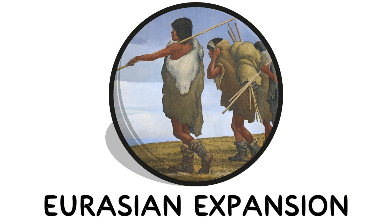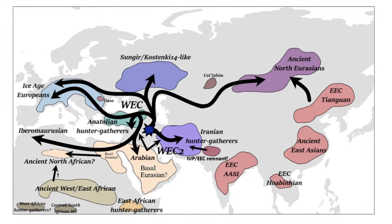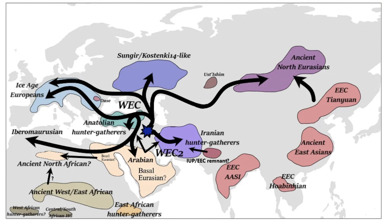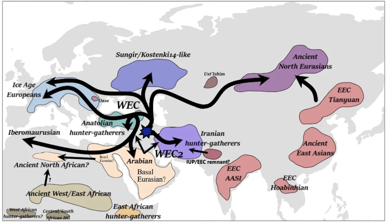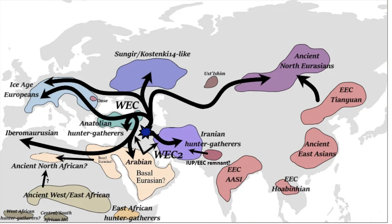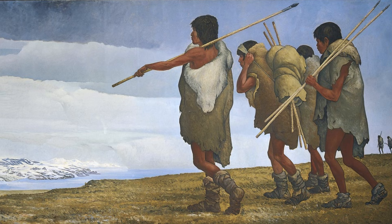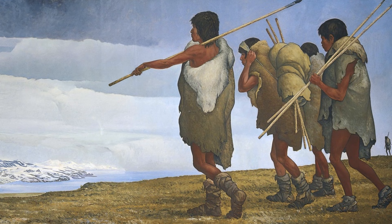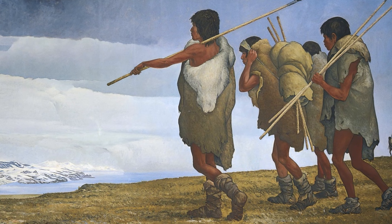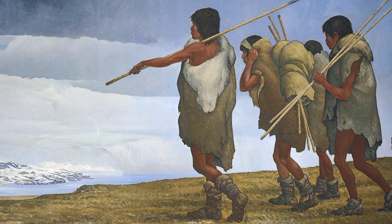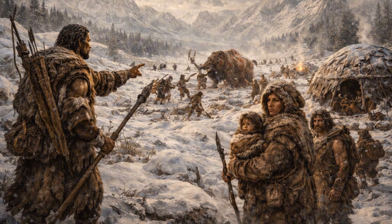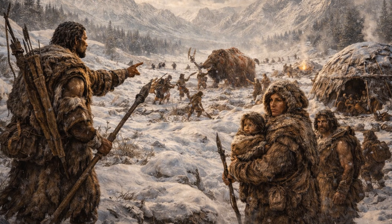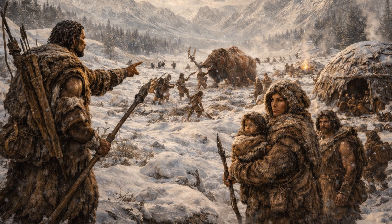Eurasian Expansion. The Eurasian Expansion describes the spread of modern humans across Europe and Asia after leaving Africa, roughly 50,000 to 30,000 years ago. As humans moved into Eurasia, they encountered a wide range of environments, from the cold climates of Ice Age Europe to the varied landscapes of Central and East Asia. This expansion required significant adaptability, including improved clothing, shelter, hunting strategies, and social organization.